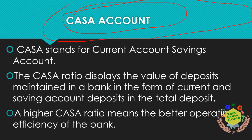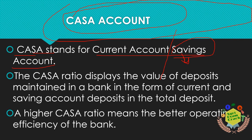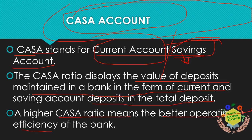CASA Account: CASA stands for Current Account and Savings Account. The major difference is that savings accounts give you interest, while current accounts are for business people and do not give interest. The CASA ratio shows the value of deposits maintained in current and savings accounts relative to total deposits. A higher CASA ratio means better operational efficiency of the bank.